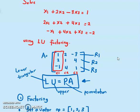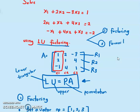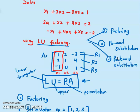To solve this system using LU factoring with maximum column pivoting, there are three steps. First, factoring — to find the matrices L, U, P, and A. The second step is using forward substitution, and the third step is using backward substitution.